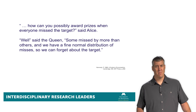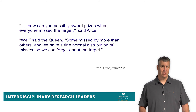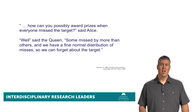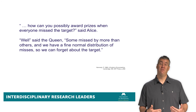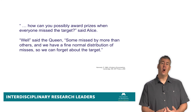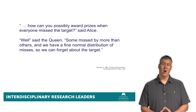One of my favorite quotes. This is about doing research with statistics, and this comes from Paul Kennedy the econometrician, playing on the Alice in Wonderland story. 'How can you possibly award prizes when everyone missed the target?' said Alice. 'Well,' said the Queen, 'some missed by more than others, and we have a fine normal distribution of misses, so we can forget about the target.' This is making a joke about statistics, losing the focus of our research. You and I are keenly interested in action research to address health disparities and population health more generally. We ought not get seduced into fancy statistics when inappropriate — we want to stay focused on the topic.